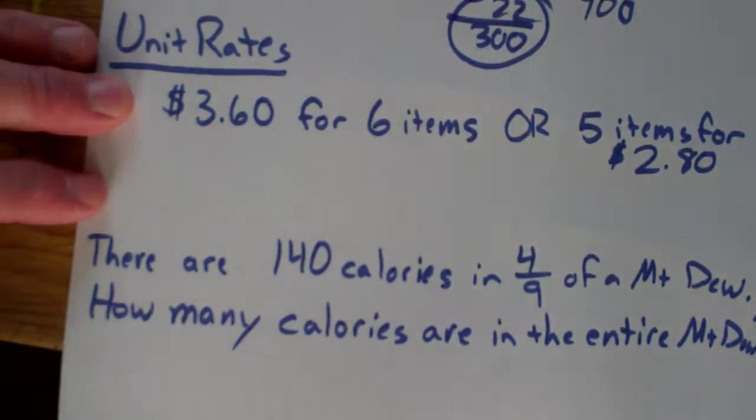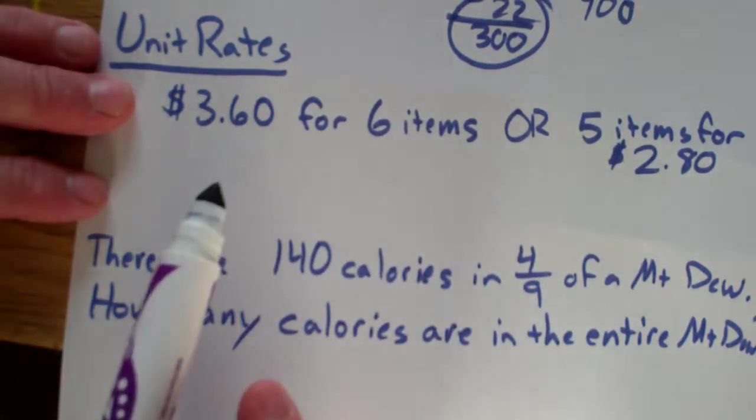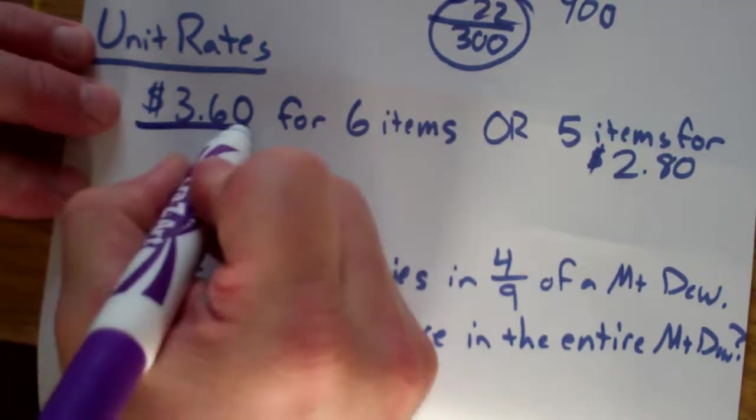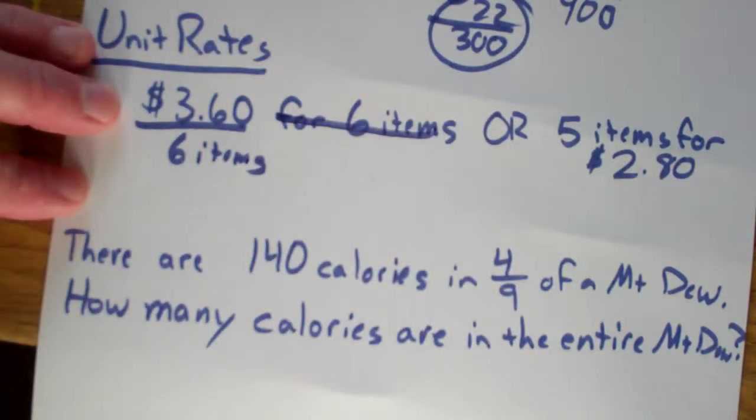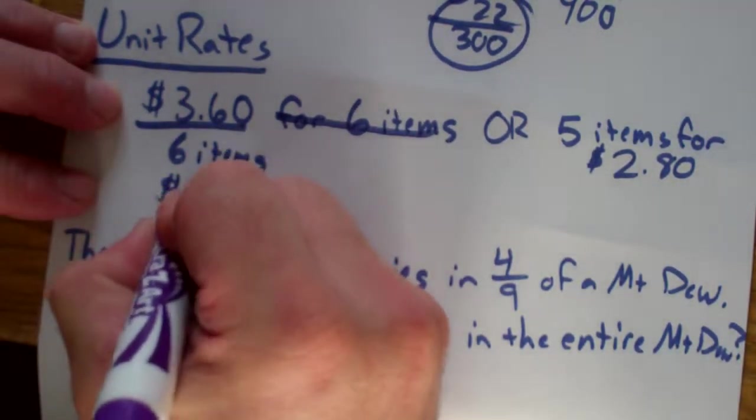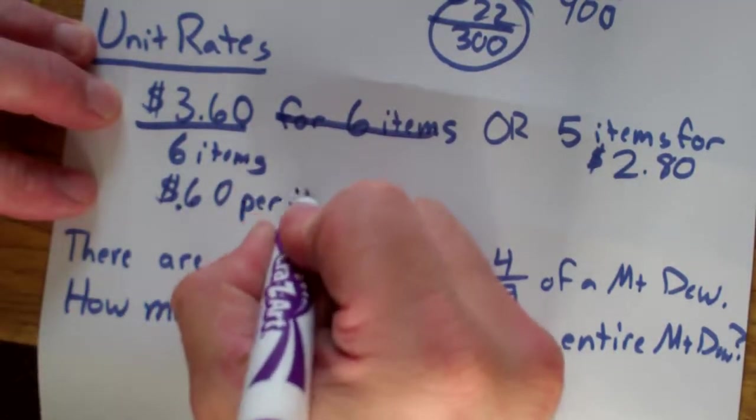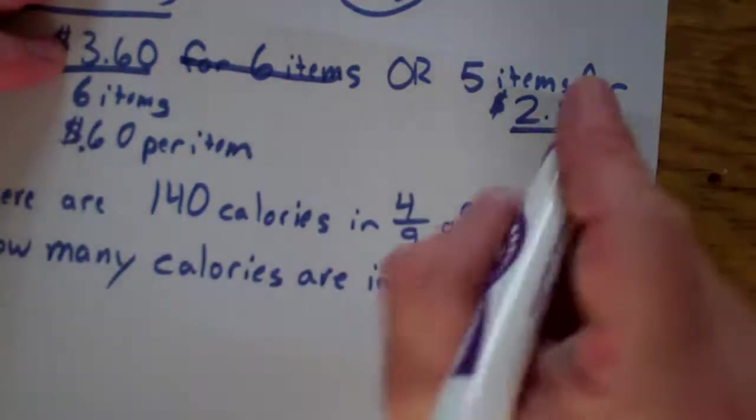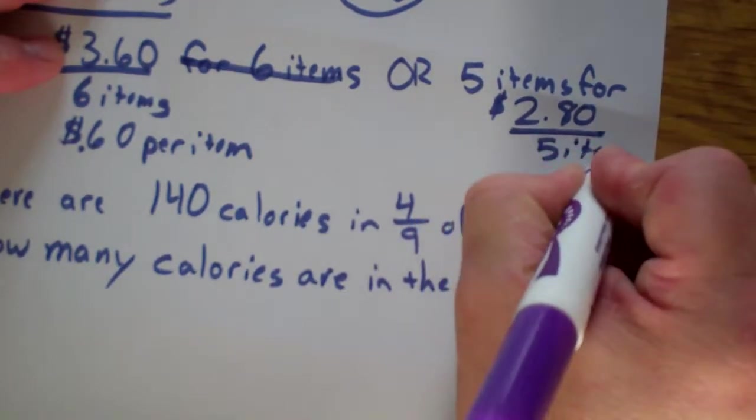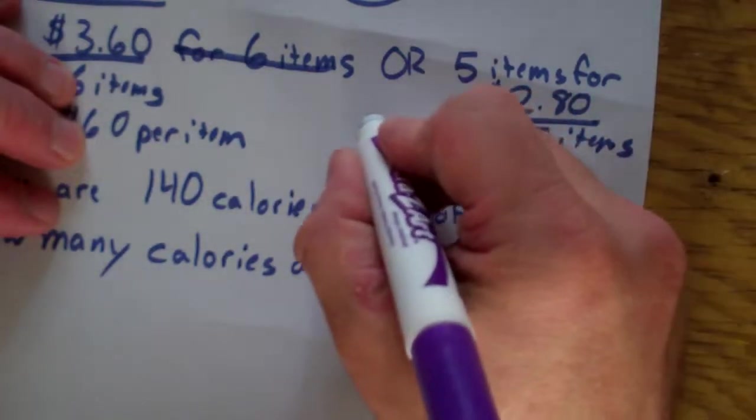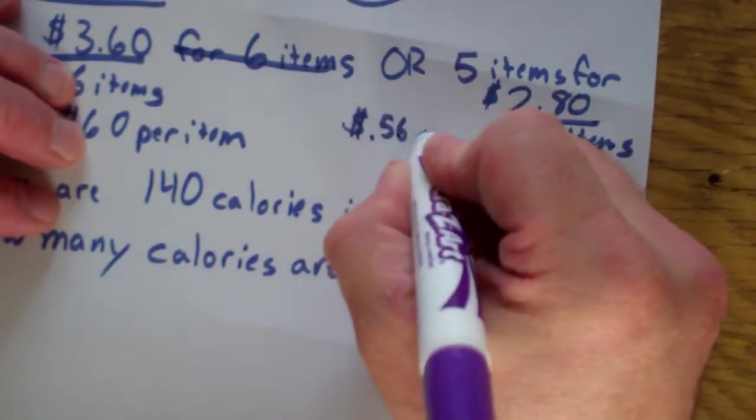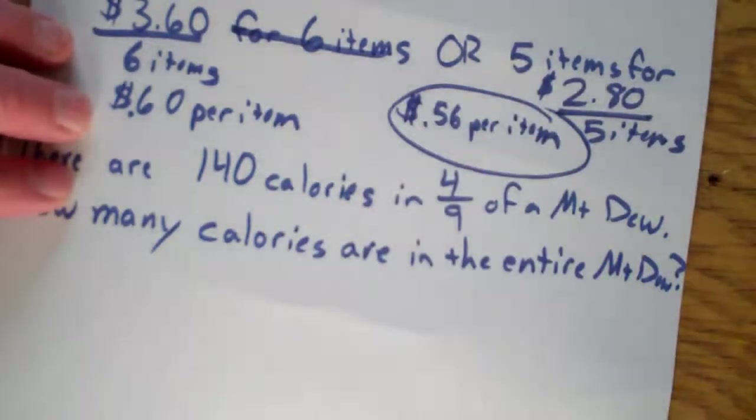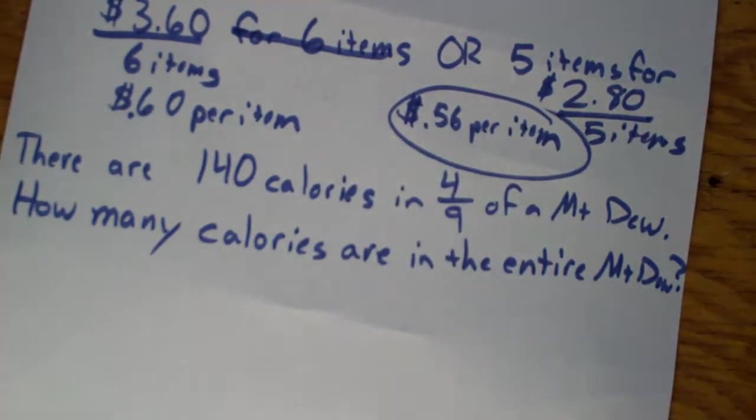Unit rates. You're going to hear me say this a lot. Or you have already heard me say this a lot. I don't want to know how much for 6 items or 5 items. I want to know how much for 1. To be able to compare them, we want to go to a unit rate of 1. So dollars per item sounds the best. So I'm just going to write it like this. And then divide it. But you're going to get 60 cents per item over here. Even though I wrote it backwards, I still want to do the same thing because I want to make sure I have the same labels. So it would be $2.80 for 5 items. I'm going to divide that. And I get 56 cents per item. Which one's a better deal? Well, I want to pay less money. So I would rather pay 56 cents per item. That's the lowest unit cost.